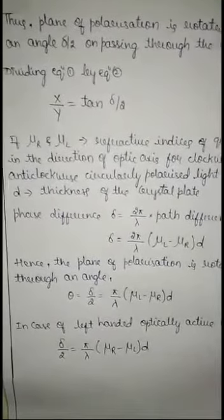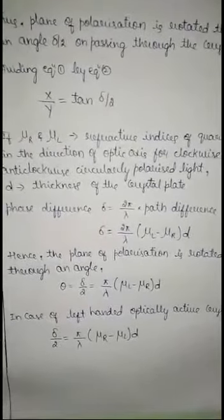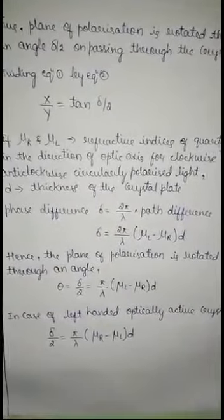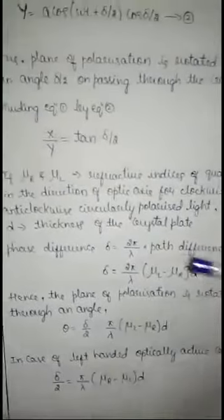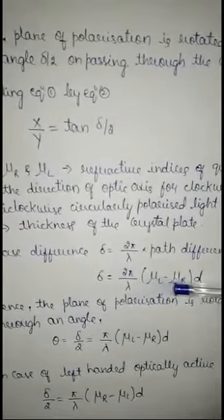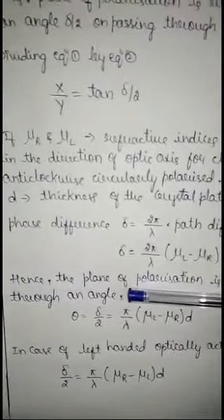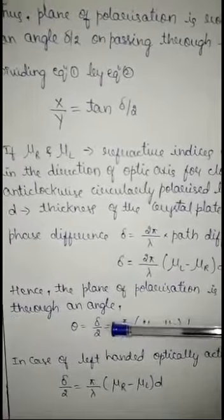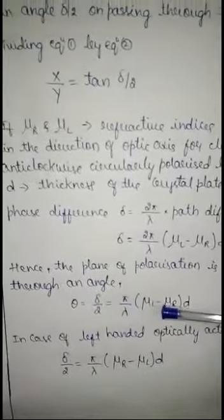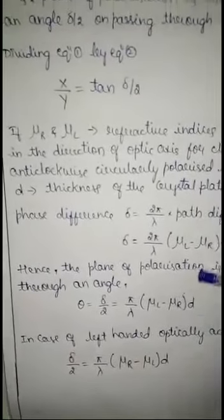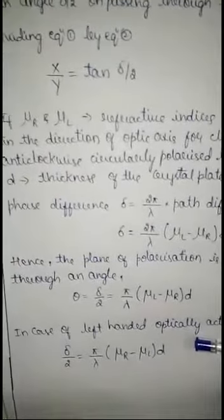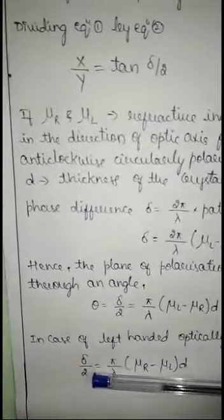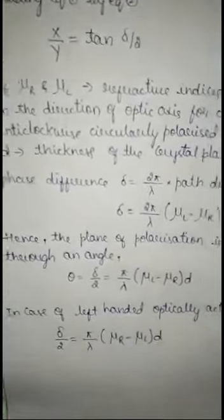If μR and μL are the refractive indices of quartz along the optic axis for clockwise and anticlockwise circularly polarized light, and D is the thickness of the crystal plate, then the phase difference is given by δ = (2π/λ)(μL − μR)D. Hence, the plane of polarization is rotated through angle θ = δ/2 = (π/λ)(μL − μR)D. If the crystal is a left-handed optically active crystal, then θ = δ/2 = (π/λ)(μR − μL)D.